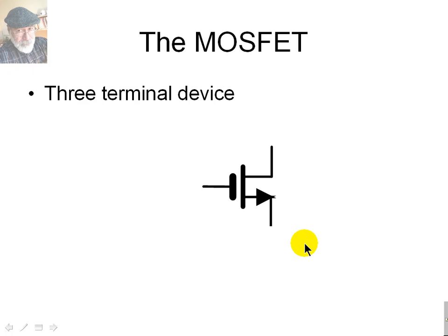The symbol used for the MOSFET in this lecture is this one, in which we clearly see the galvanic separation of the gate from the channel. The drain and the source are identified like that. Observe that the source includes an arrow to identify the direction of the current in the channel.